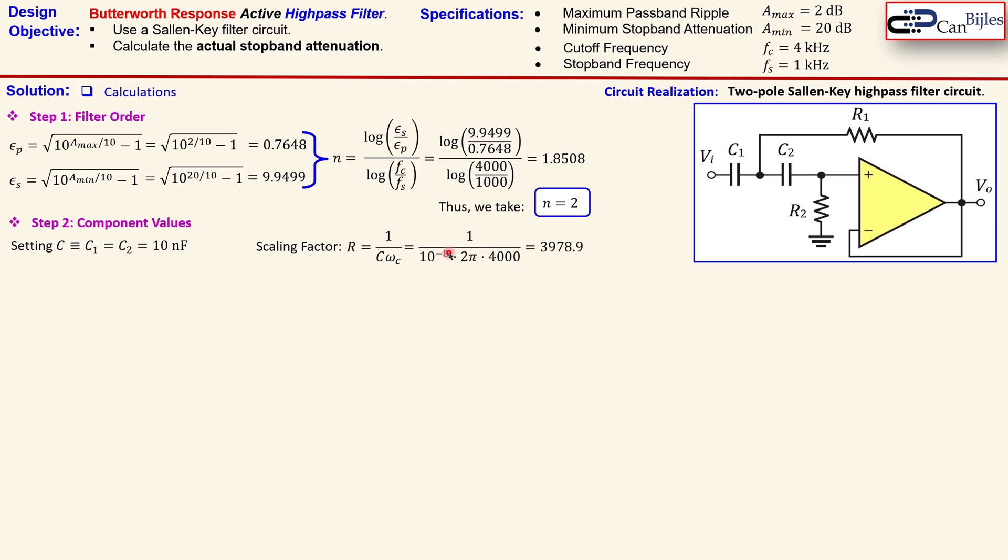Of course we do this now 2π times this 4 kilohertz, so this is then 10^-8 which is 10 nanofarads, 2π times 4000 from the 4 kilohertz cutoff frequency. Now this will result in 3978.9. This is a number we will use in the calculation of R1 and R2.